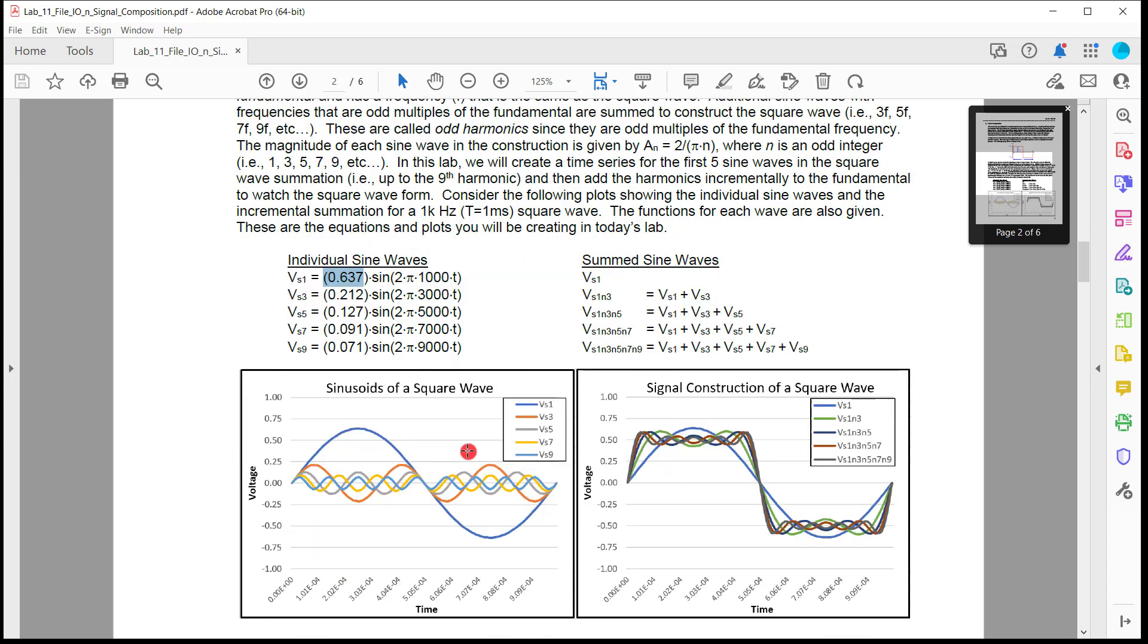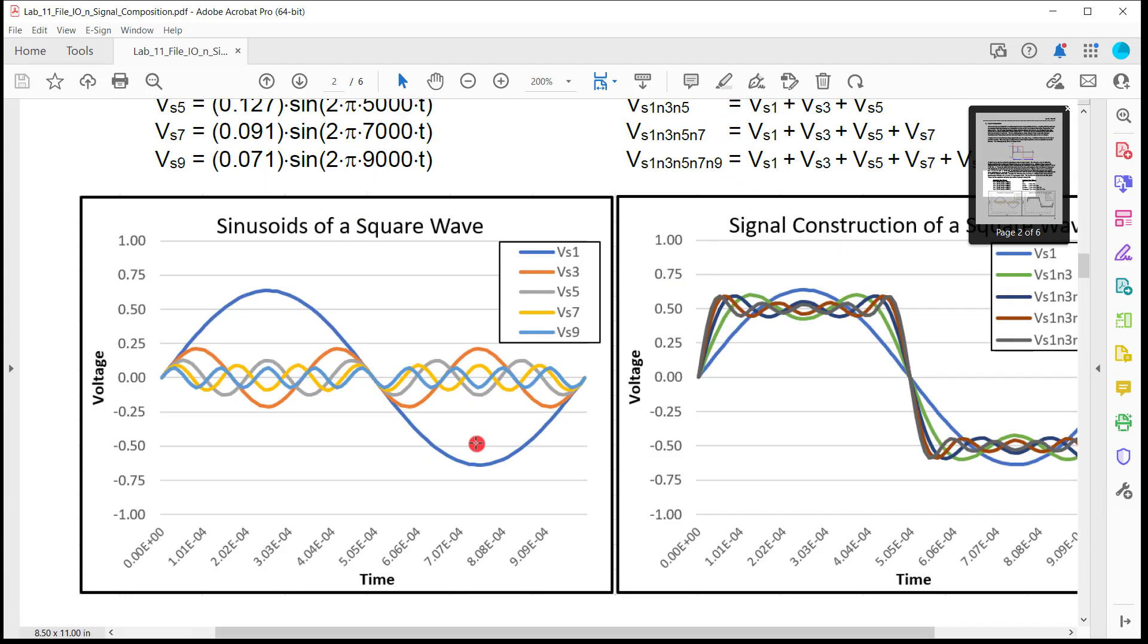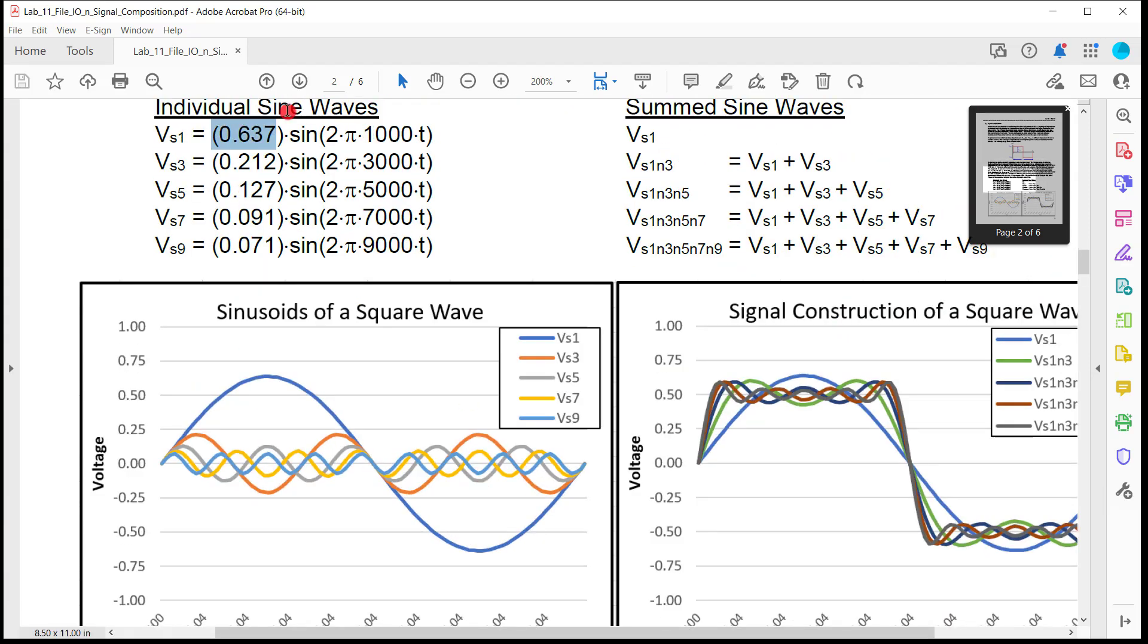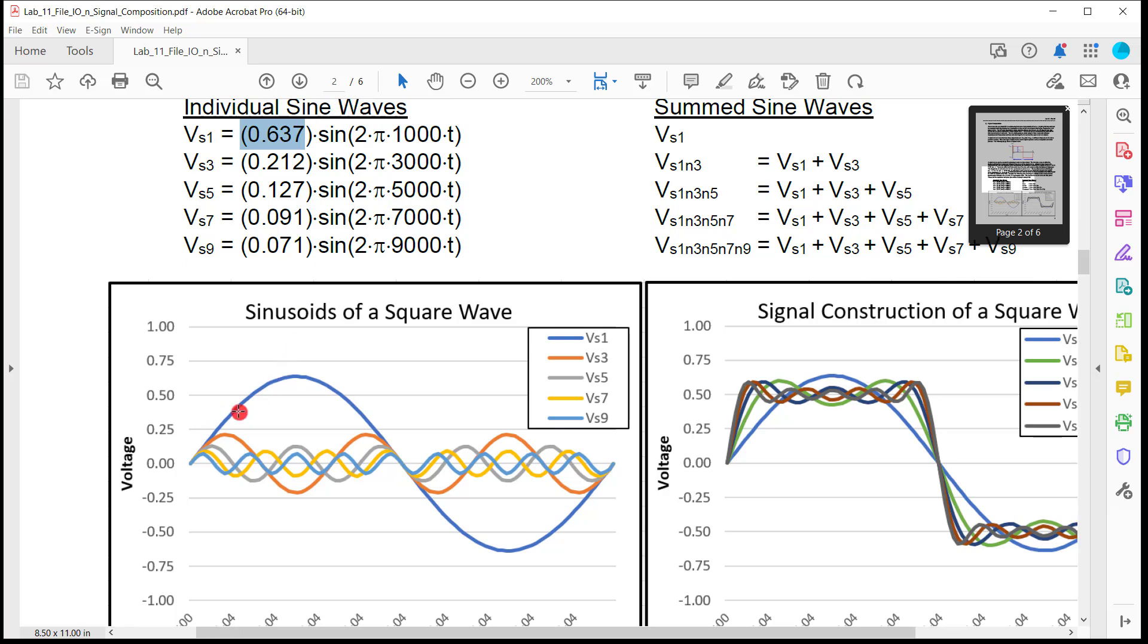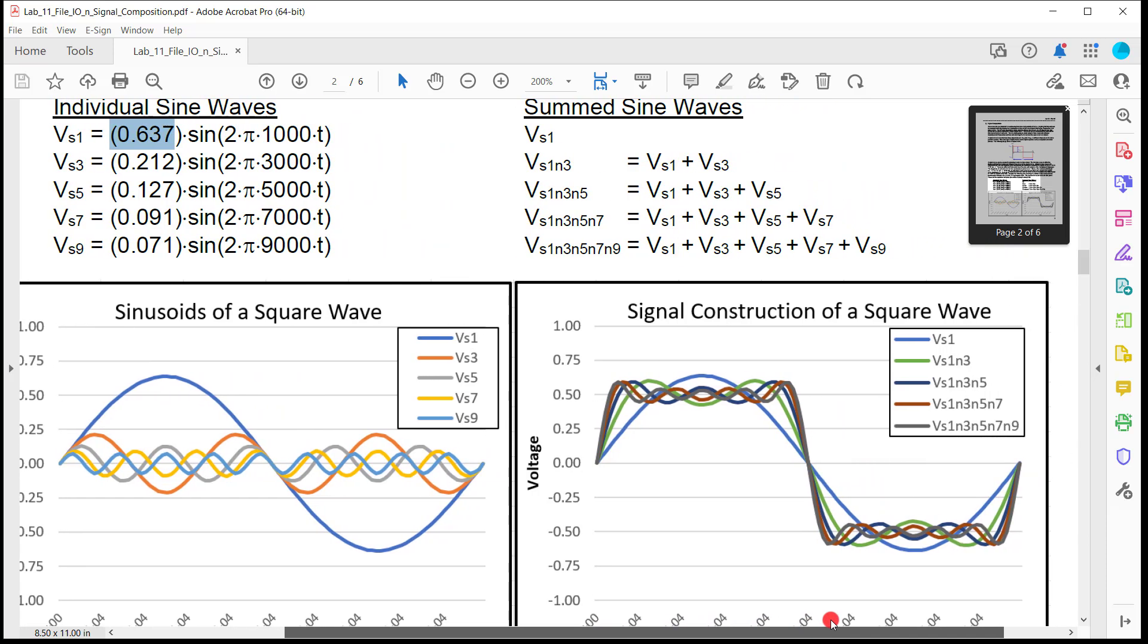It turns out that if you plotted all these separately, you get this. You just get a whole bunch of sine waves that have different frequencies. So this is these individual sine waves. If you started adding them together, though, you actually start seeing a square wave emerge. And so this is the original sine wave is the blue. So it's like, oh, that's a sine wave. I get it.